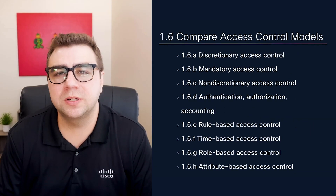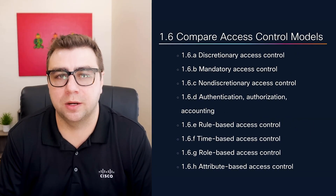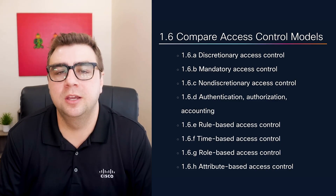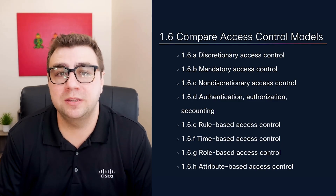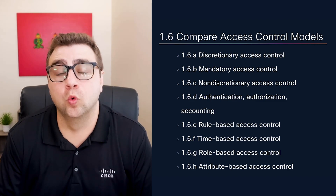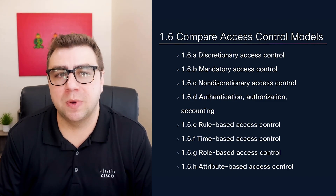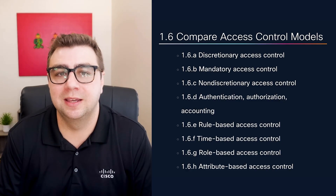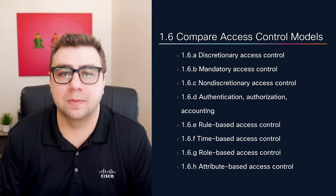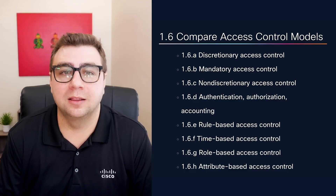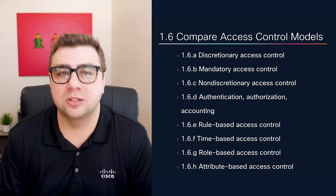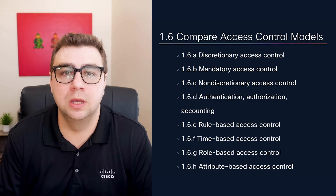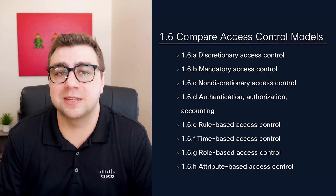You'll also want to get familiar with access control models. This includes discretionary, mandatory, and non-discretionary access, as well as role-based, attribute-based, and rule-based models. The AAA model — standing for authentication, authorization, and accounting — is essential, and it's worth reviewing what each part of the acronym actually covers. A lot of security issues tie back to poorly implemented access control, so expect to see questions in this area.